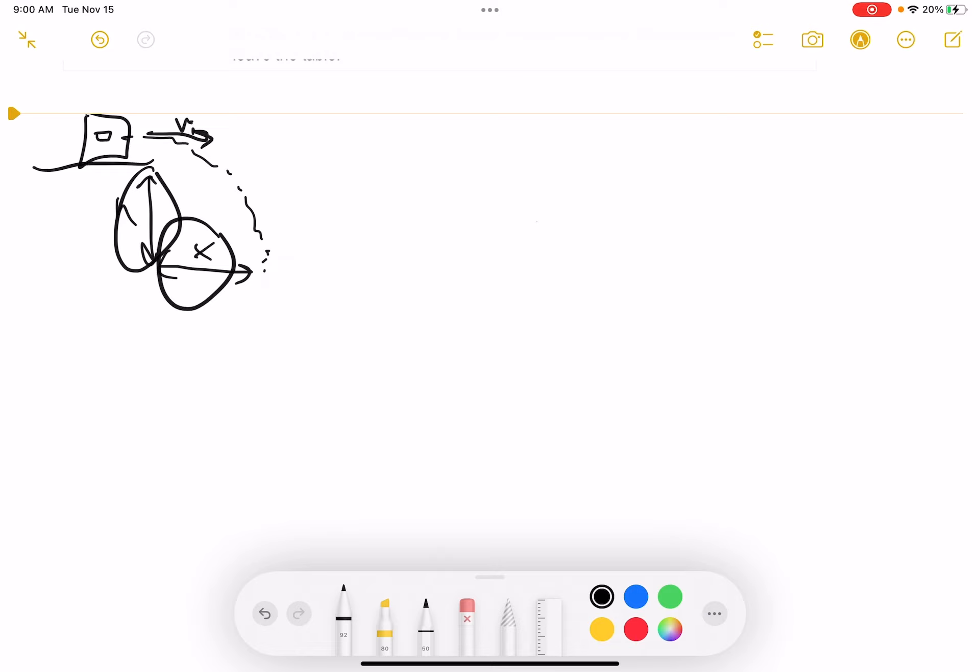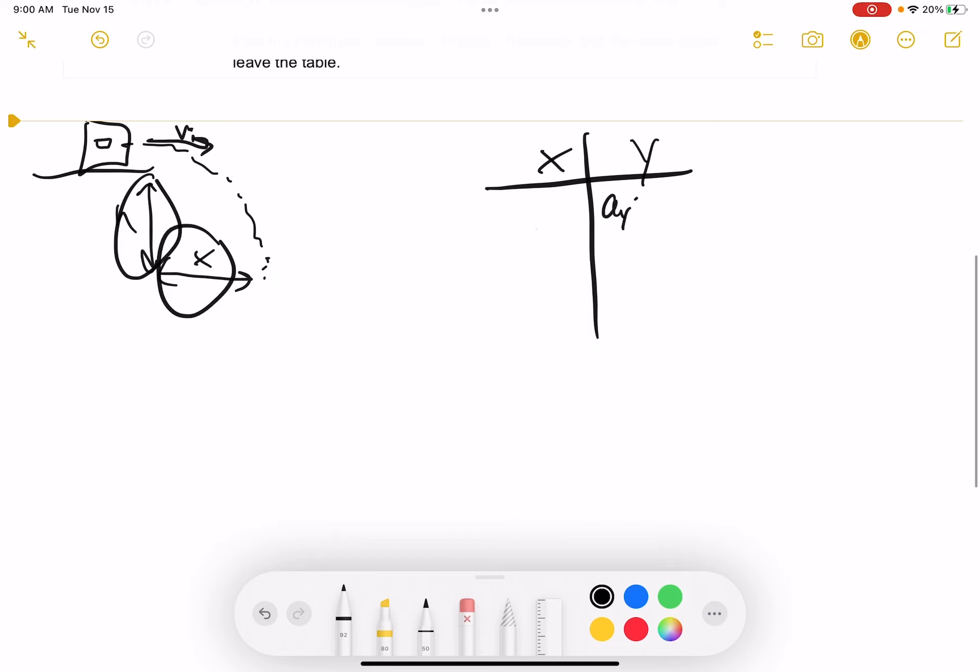So this is a two-dimensional kinematics question. So what do I need to set up first? I got to set up my x-y chart, right? Okay, so let's go ahead and write down all the variables we know in our x direction and also in our y direction.